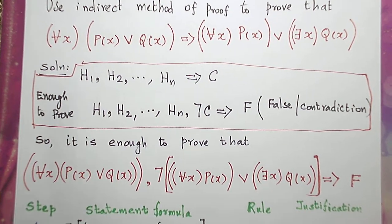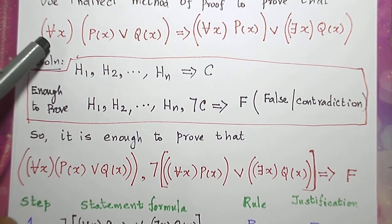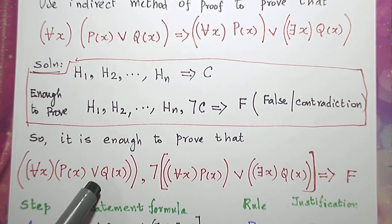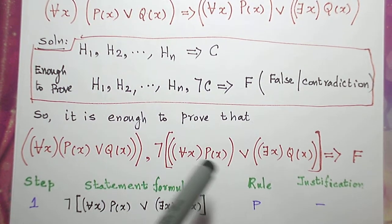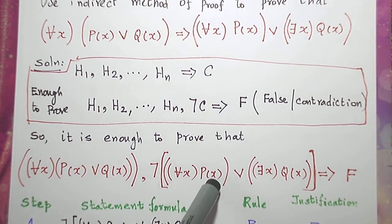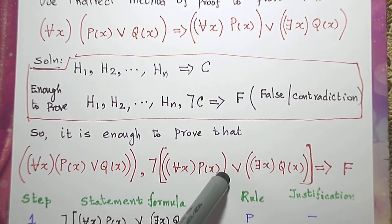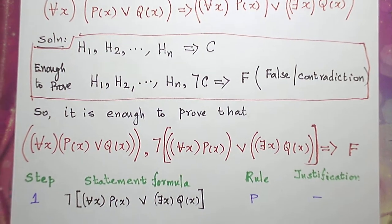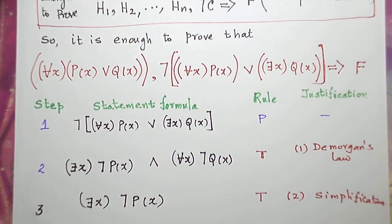When we apply this indirect method of proof, it is enough to prove that we just take the given premise as it is: for all x, p(x) or q(x) is the given premise. Along with this, I am going to take the negation of the conclusion. The conclusion is: for all x p(x) or there exists x q(x). This is the negation of that conclusion. When we combine these two premises we should get a false statement — a contradiction.